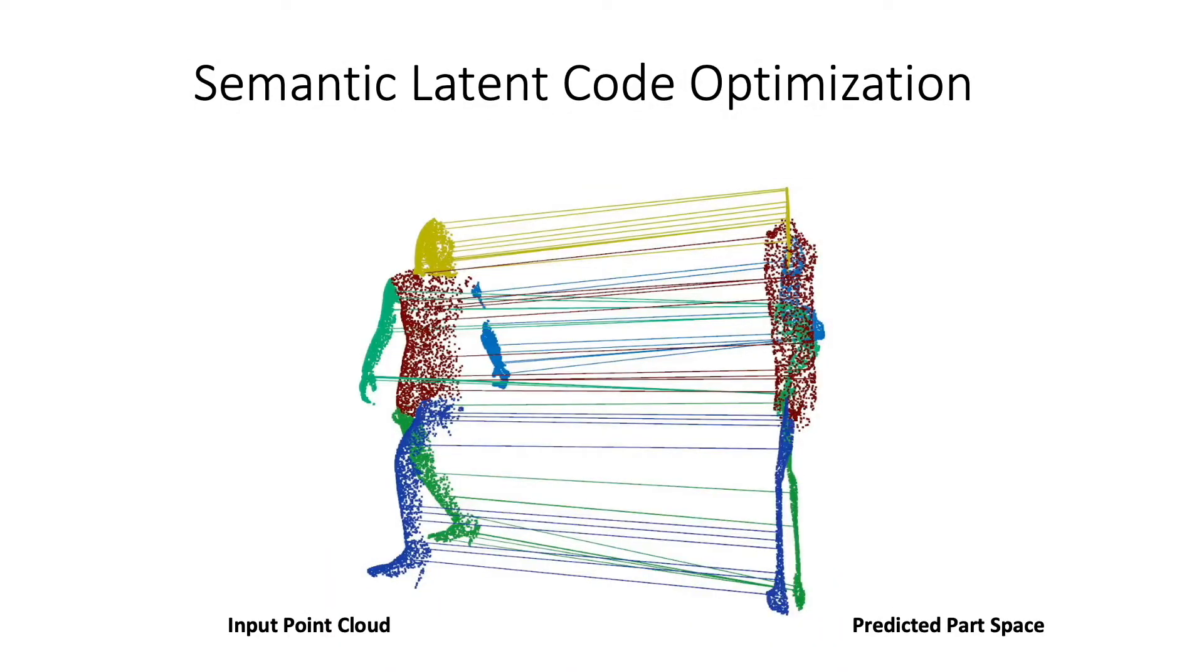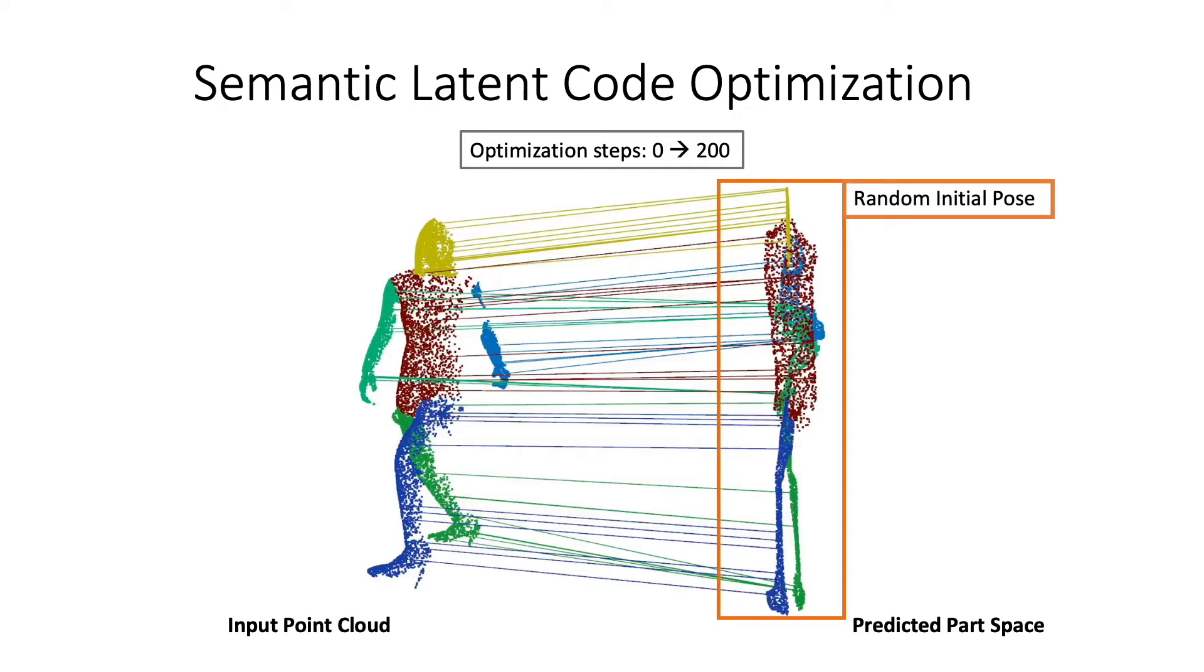To fit to a new depth sequence, we establish part correspondences between the input observations on the left and our learned part spaces on the right. This guides a robust joint optimization between the shape and pose of all parts, which can even compensate for an arbitrary initialization of the pose.